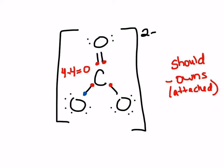Now let's do the oxygens on the outside. Each oxygen should own six valence electrons. Starting with the one on top: it owns one, two, three, four from its lone pairs, and one from each bond — so that's six total. This gives the top oxygen a formal charge of zero.